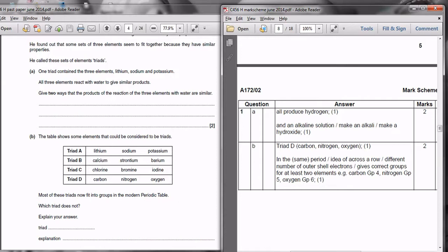For this you need to be able to recall the products of lithium, sodium and potassium with water. We know that they all produce hydrogen gas and they produce a hydroxide of some description. You can get away with being more general than that and saying an alkaline solution or an alkali for the second mark.